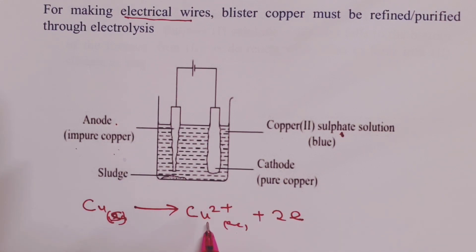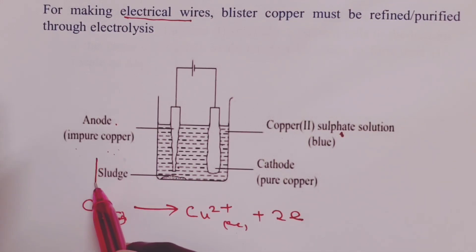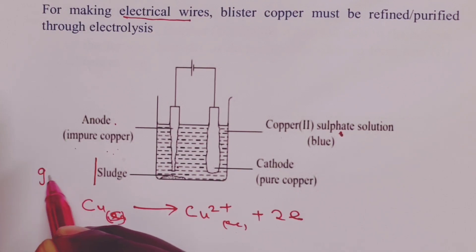As the ions are formed here, our impure copper is going to dissolve and go into solution as copper ions. This leaves behind the impurities, which we have here as sludge. We can also call them gauge, or a candidate can just use the word impurities.